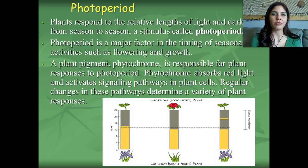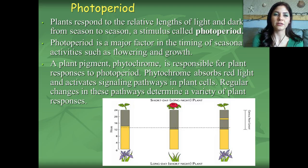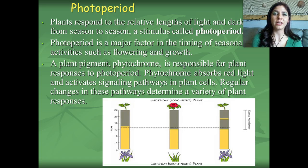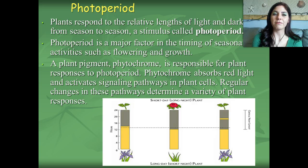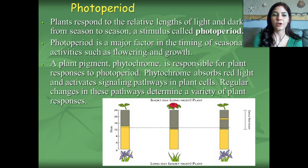Now let's talk about photoperiods. If you break that word down, 'photo' means light and 'period' is a section of time. So plants respond to the relative lengths of light and darkness from season to season, and this stimulus is called a photoperiod. A photoperiod is a major factor in the timing of seasonal activities such as flowering, growth, and reproduction of plants. A plant pigment called phytochrome is responsible for the plant's responses to the photoperiod — it absorbs red light and activates signaling pathways in plant cells, and regular changes in these pathways determine a variety of plant responses.